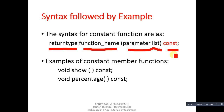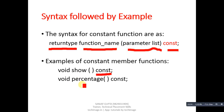For example, the first function is: void show() const — where void is the return type, show is the function name, parentheses are blank meaning no arguments are passed, and const makes it a constant member function. Similarly, the second function percentage also has const. Both functions are constant member functions — they can access values of data members but cannot modify them.